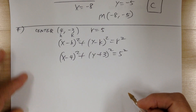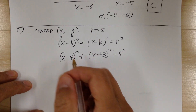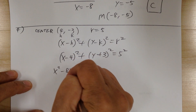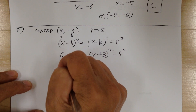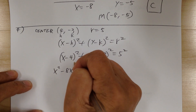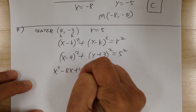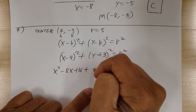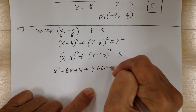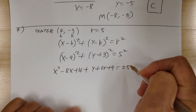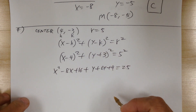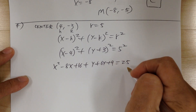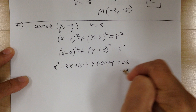Now multiply everything out. You get x squared — remember the middle term would be minus 8x — plus 16. For the y term, you get y squared plus 6y plus 9, equals 25. Make sure you know how to multiply your squares. Then move everything to this side — minus 25.